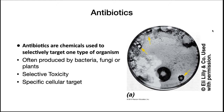Antibiotics are chemicals used to target one type of organism selectively. They are often produced by bacteria, fungi, or plants and have selective toxicity, meaning they only harm bacteria and not the host. Each antibiotic will have a specific cellular target.